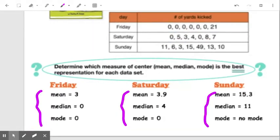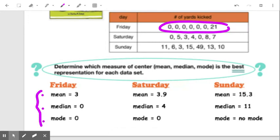So what I'd like to do is start with Friday's data. And you can see that for Friday's data, the mean is three, the median is zero, and the mode is also zero. So if I were to ask you which one of those three numbers is best representation of this set of data right here, I know that that data set is made up of six zeros and a 21. So if I were going to pick one of these three representations for this data, I would probably not pick the mean.